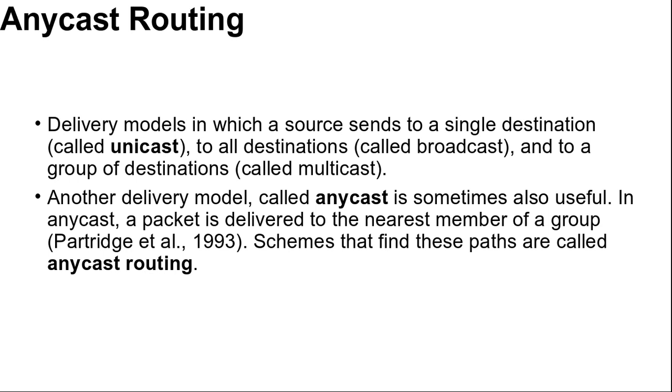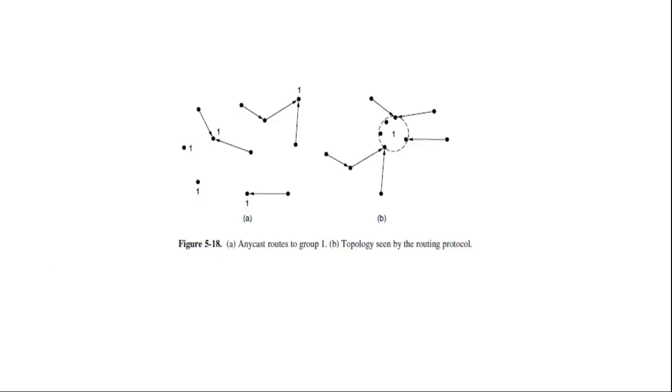For example, anycast is used in the internet as part of DNS. We will not have to devise new routing schemes for anycast because regular distance vector and link state routing can produce anycast routes. Suppose we want anycast to the members of group 1; they will all be given the address 1 instead of different addresses.